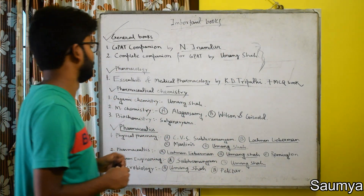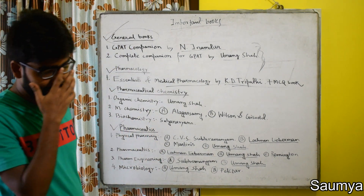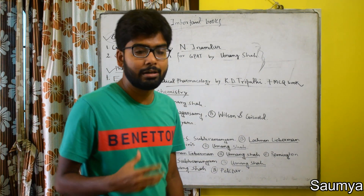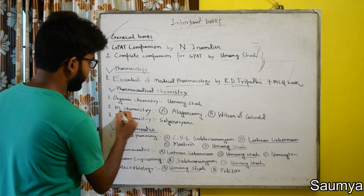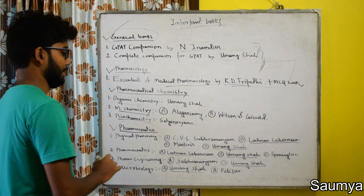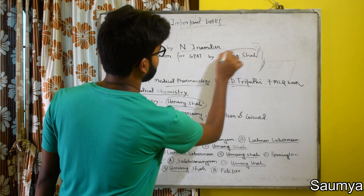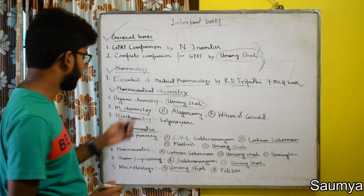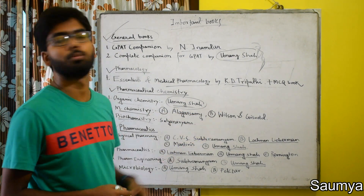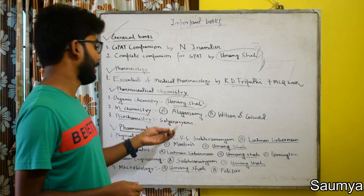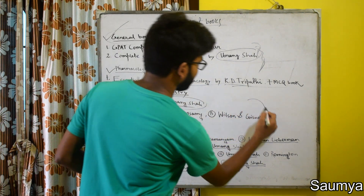Then coming to the next topic — Pharmaceutical Chemistry. Pharmaceutical Chemistry has different topics: Organic Chemistry, Medicinal Chemistry, and Biochemistry. The book written by Umang Shah is important for your Organic Chemistry also. For Medicinal Chemistry, you should have Alagar Sami or Wilson Gisvold. For Biochemistry, you should have Satyanarayana. I think these books are sufficient.